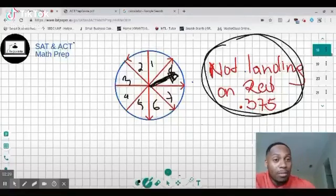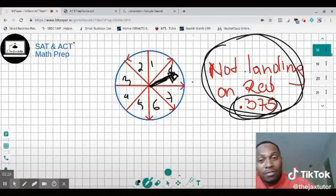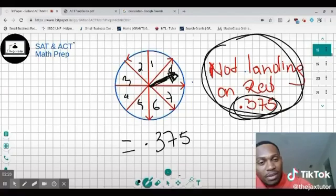The probability of not landing on red would be 0.385? So the probability of not landing on red is 0.75, not 0.35. It's 0.75.